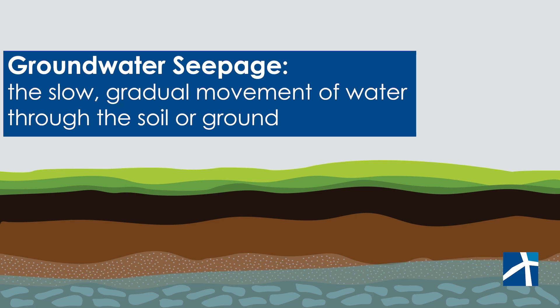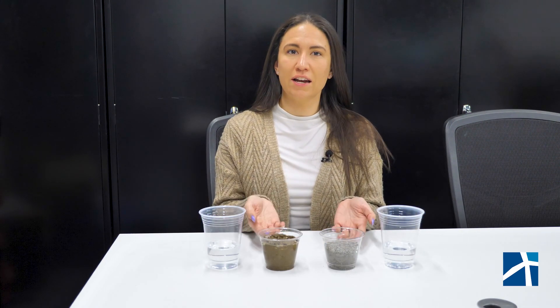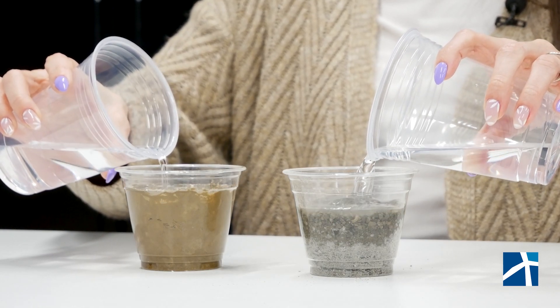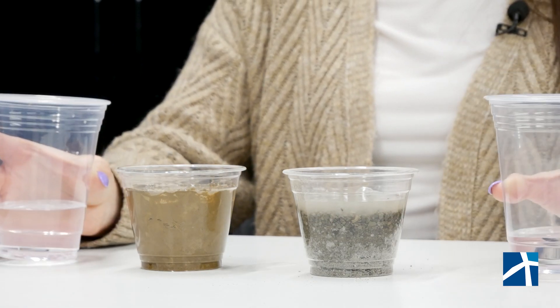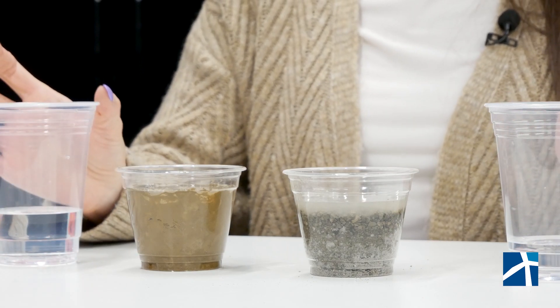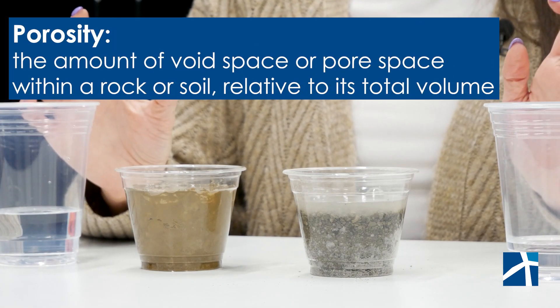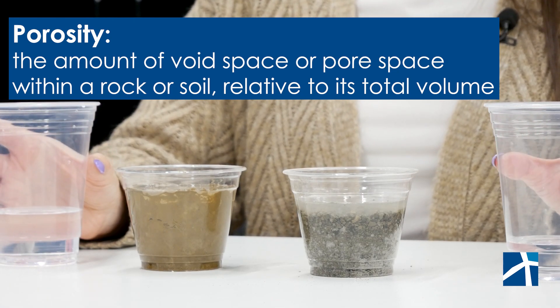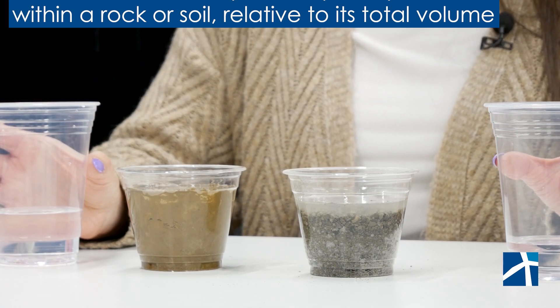Let's do an experiment to see how this works. Seepage depends on the tiny spaces between soil particles, and different types of soil have different amounts of space between their particles. Let's see what happens when we pour water into two different materials — sand and clay. See how the water quickly moves through the sand but barely seeps through the clay? That's because sand has high porosity, meaning it has lots of tiny spaces for water to flow through. Clay has low porosity, so it holds onto water instead of letting it seep through.